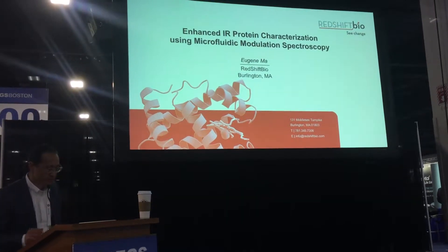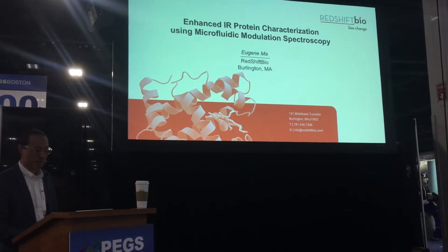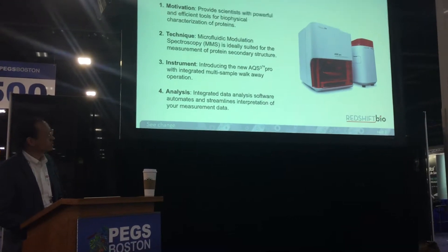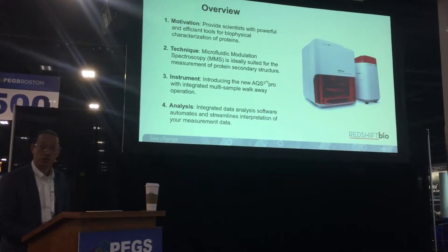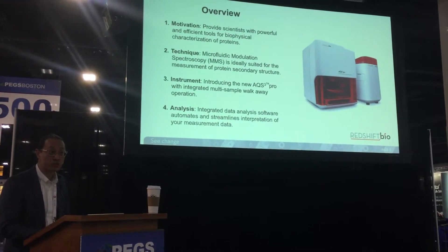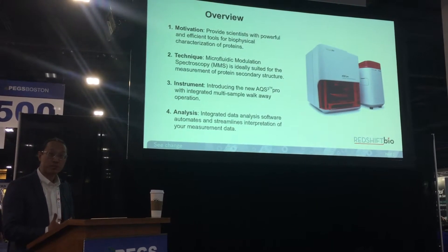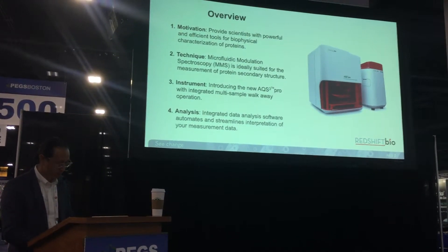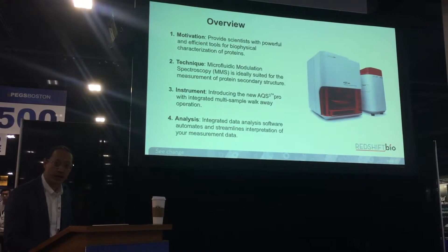This morning's presentation is titled Enhanced IR Protein Characterization Using Microfluidic Modulation Spectroscopy. Here's a quick overview. At Redshift, our motivation is to provide scientists with powerful and efficient tools for biophysical characterization of their proteins. To that end, we've developed a novel technique called microfluidic modulation spectroscopy. We built an instrument around this platform which we are introducing here at PEGS — it's called the AQS3 Pro. I'll also walk you through our integrated data analytics software.